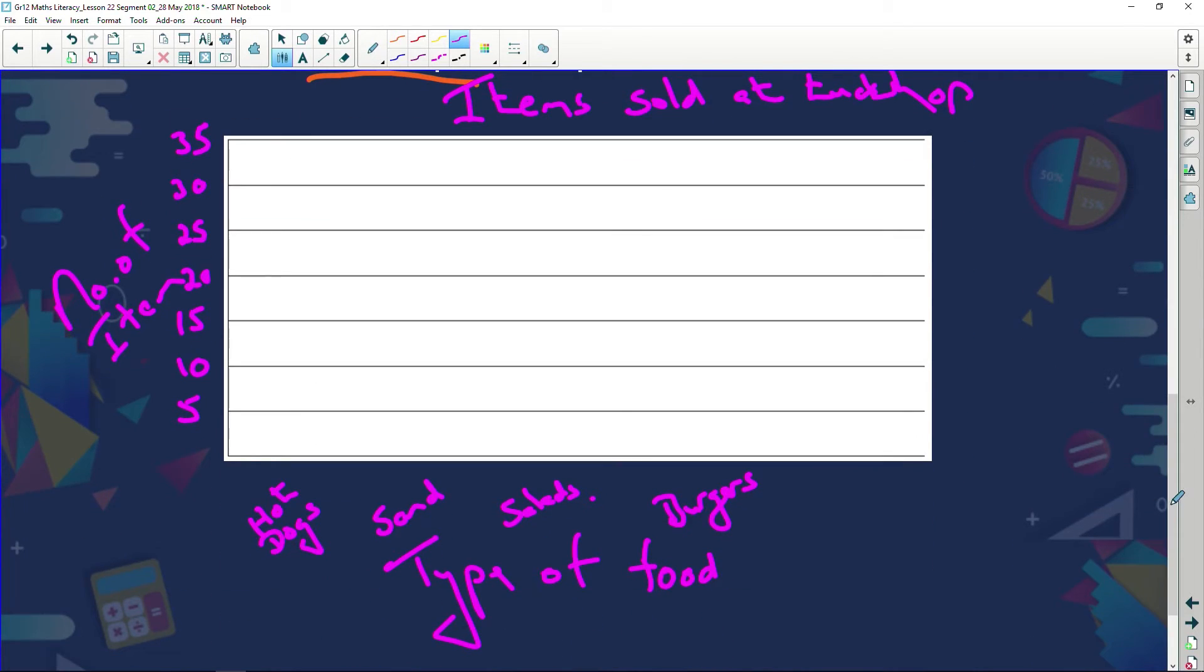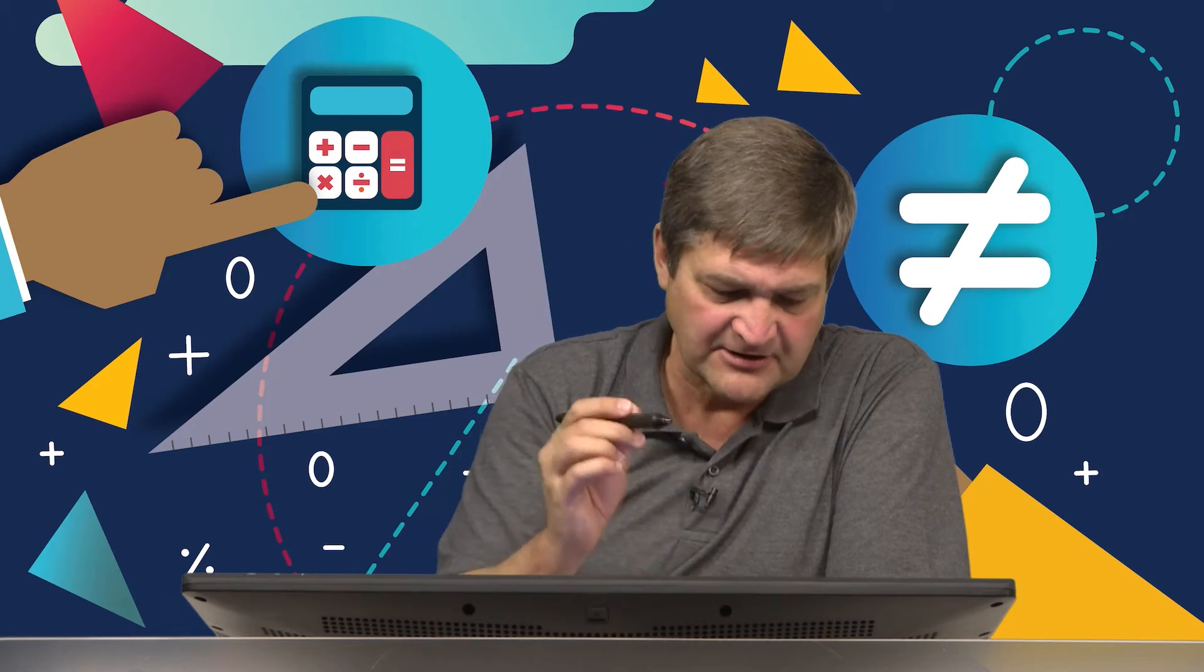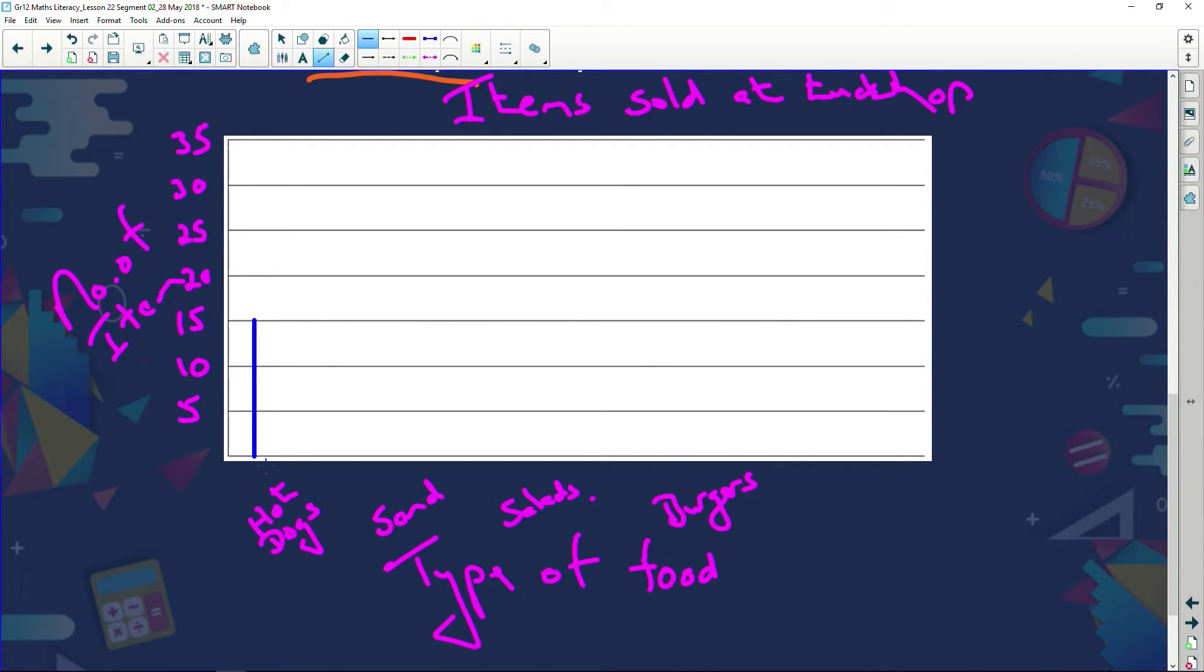So here we go. Firstly, hot dogs, 15. So now I've got to draw a bar graph. So I'm going to take my ruler and you should use a ruler here. And I'm going to say hot dogs. I've got 15. So let's draw that down over there. 15 hot dogs.